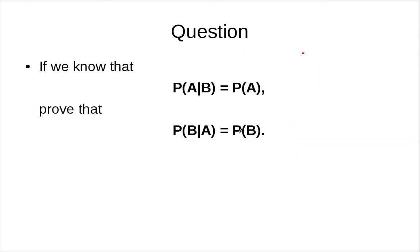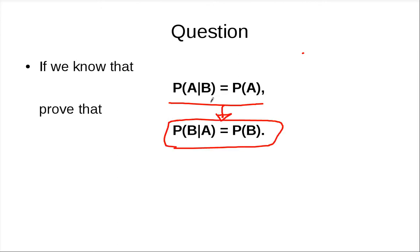The last question: can you prove this fact using what we've learned? If P(A|B) = P(A), prove that this implies P(B|A) = P(B) — meaning if knowing B occurs doesn't change the probability of A, then knowing A occurs doesn't change the probability of B either. See you in the next clip.